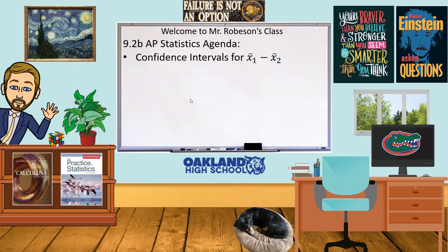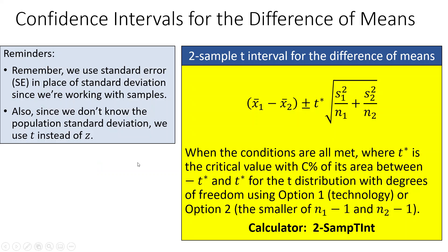Now that we looked at the sampling distributions for the difference of two means, we can talk about how to make confidence intervals because that relies on a lot of the stuff from sampling distributions. When working with means, we're almost always using t's instead of z's because we generally don't know the population standard deviations.